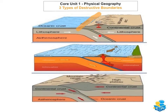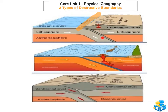The oceanic crust subducts beneath the continental crust, and as it sinks the rock starts to melt. It can be forced down 100 kilometers. As the rocks are melting under that pressure, they will be metamorphosed — meaning they change to metamorphic rocks because of the heat and pressure they are under.